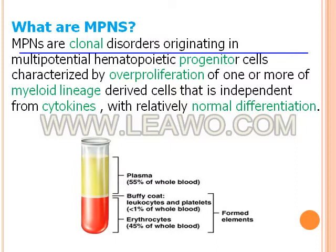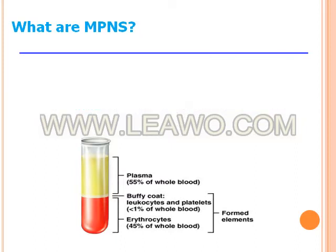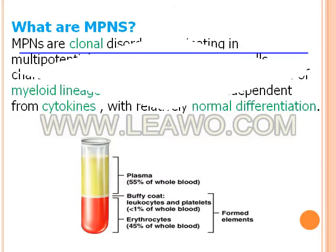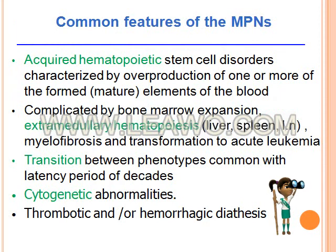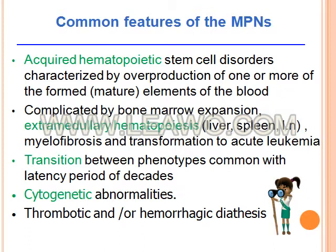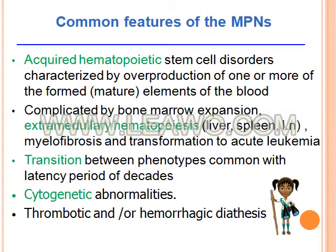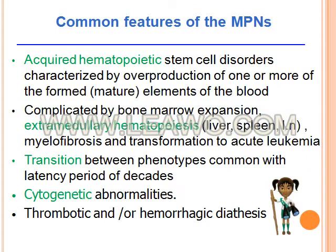Notice that all the normal physiology we discussed before is reversed in myeloproliferative neoplasms. They are acquired hematopoietic stem cell disorders characterized by overproduction of one or more formed elements of the blood. They can be complicated by bone marrow expansion and extramedullary hematopoiesis taking place in the liver and spleen.